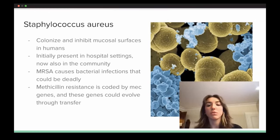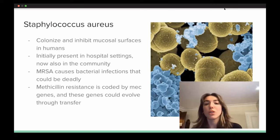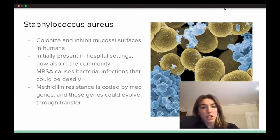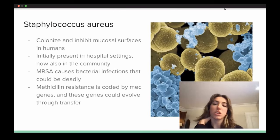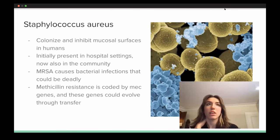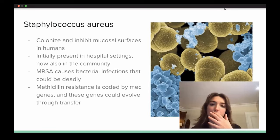MRSA basically causes bacterial infections that could be deadly because methicillin-resistant Staphylococcus aureus is resistant to antibiotics, and so there's no drug to be able to treat these infections. The methicillin resistance is coded by the mec genes in these bacteria, and these genes could evolve faster and they could change their resistance through gene transfer.